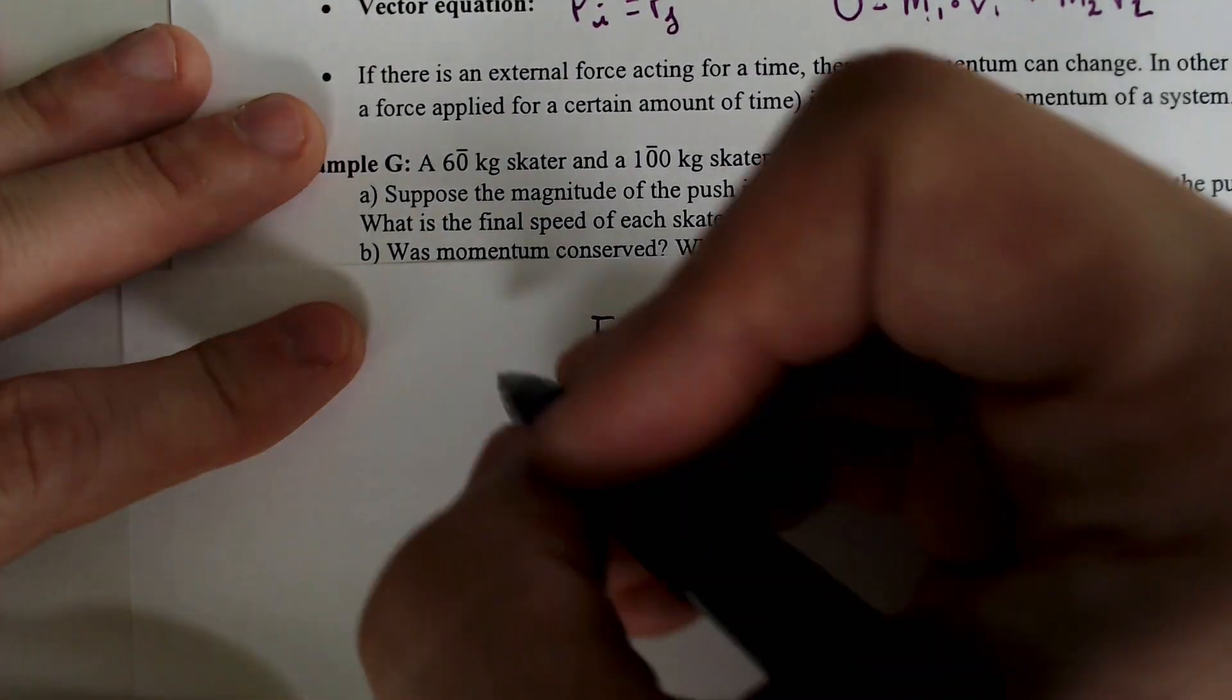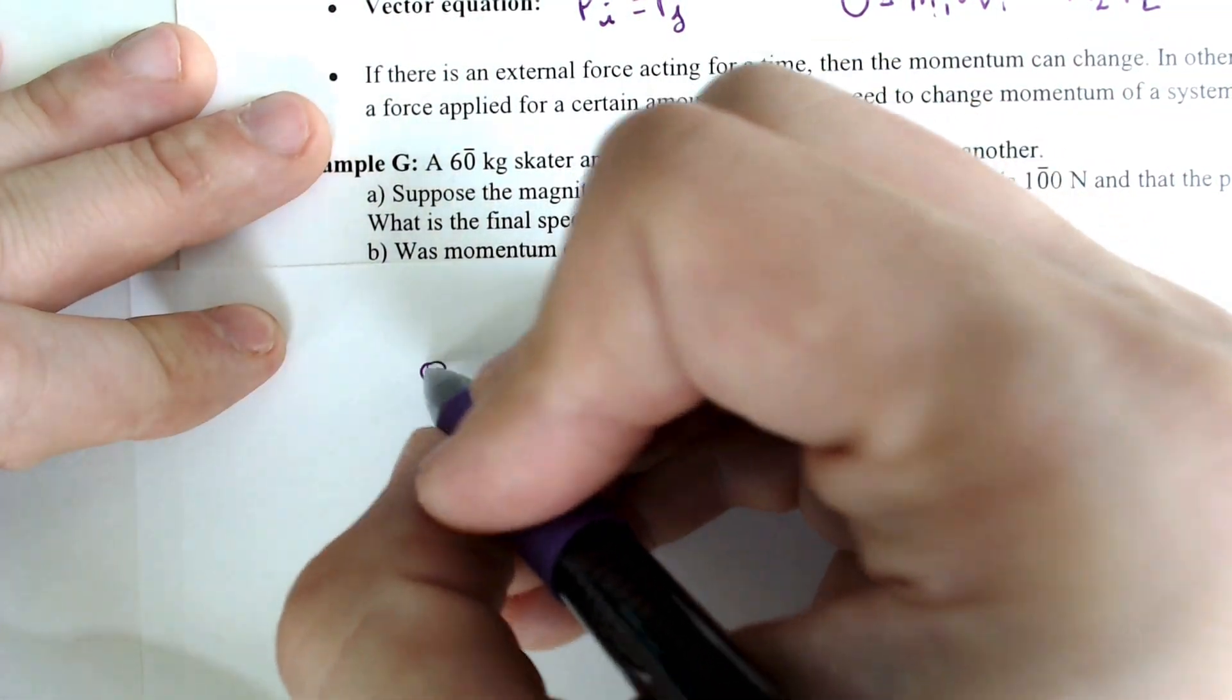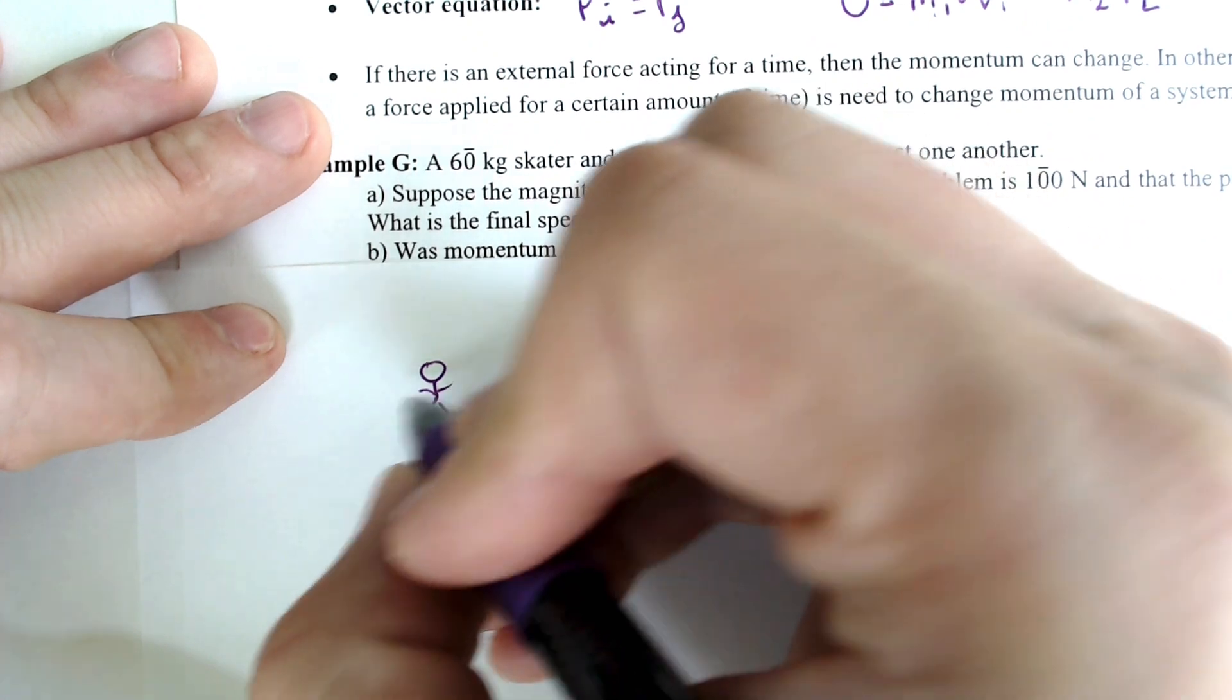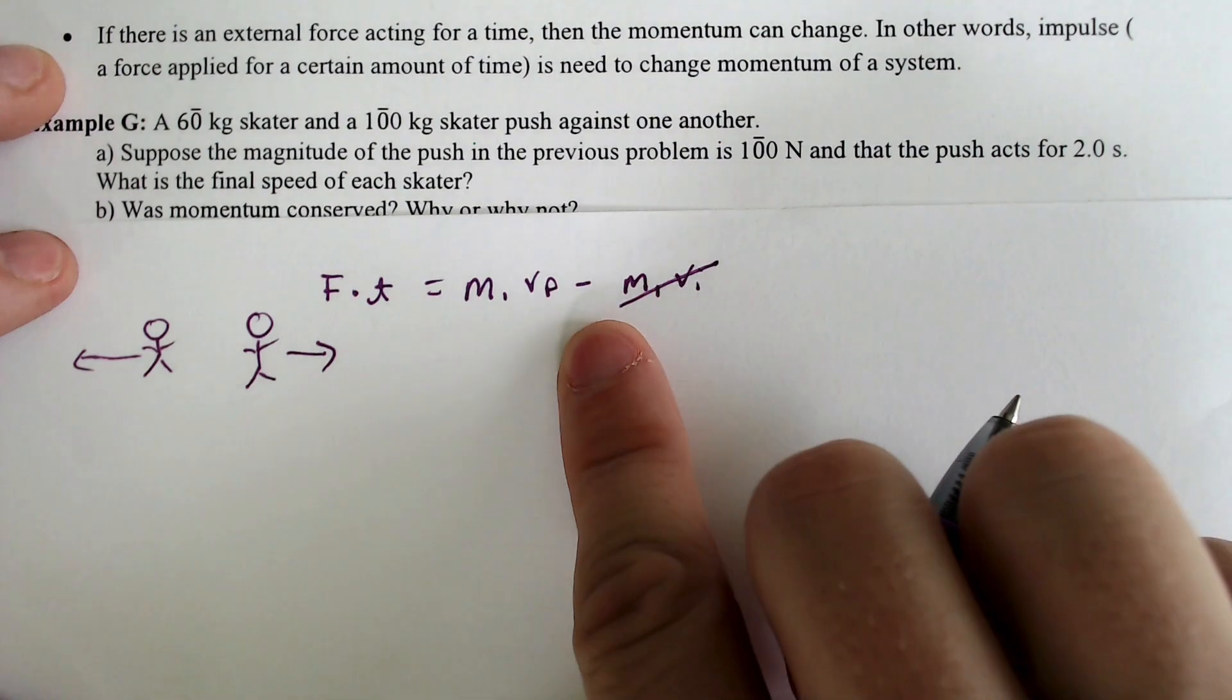So essentially, they had originally these two skaters over here. They were next to each other, starting at zero, and then they started flying off in opposite directions. So that would be the skater one.